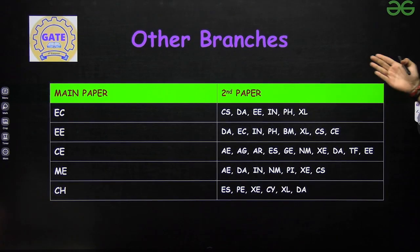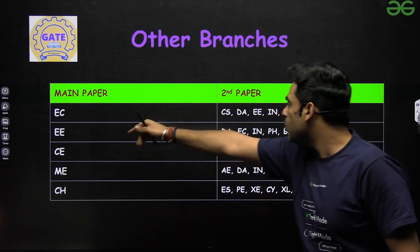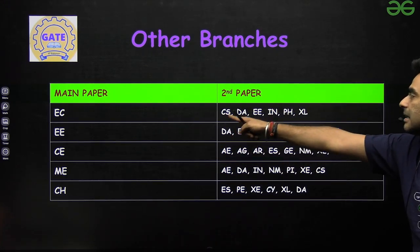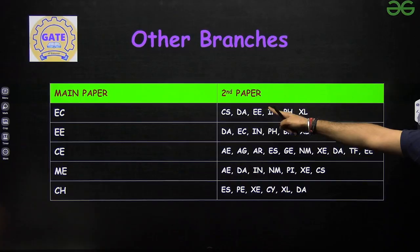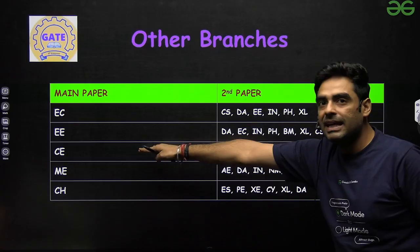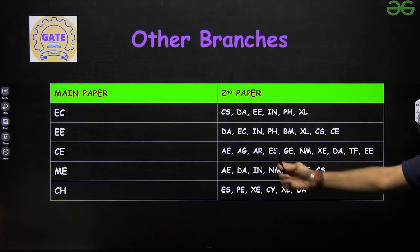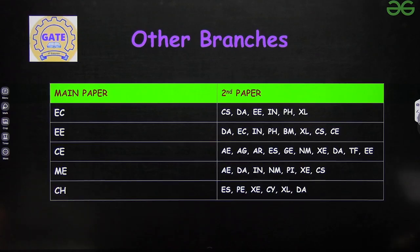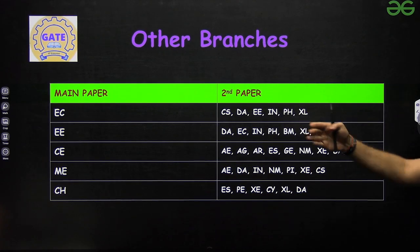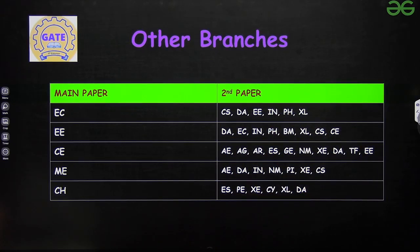For other branches, I have them in tabular form. With EC as the main paper, you can take: CS, DA, Electrical, Instrumentation, Physics, and XE (Life Science). For Electrical as the main paper, you can take: DA, EC, Instrumentation, Physics, Biomedical, XE (Life Science), CS, and Civil Engineering. I would recommend everyone to take a snapshot of this slide as you will get a lot of information from it.